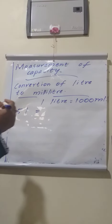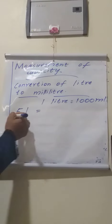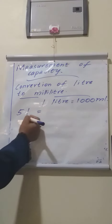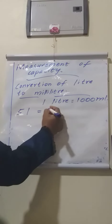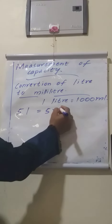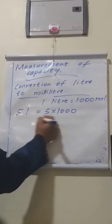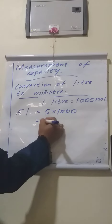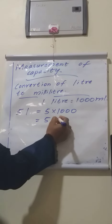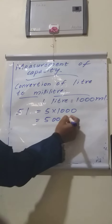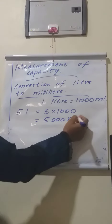Do you know this? Yes. 5 liter is equal to 5 into thousand. Is equal to what? 5,000 ml.